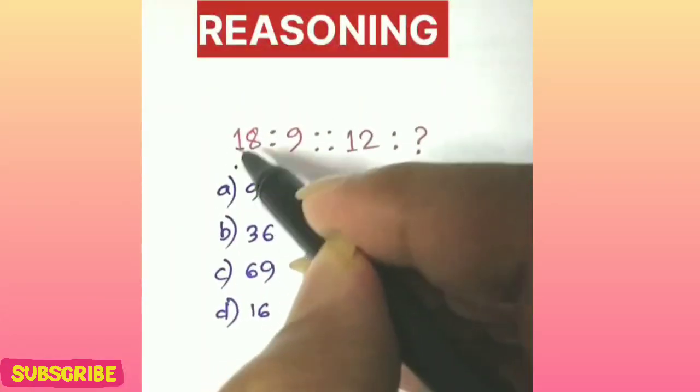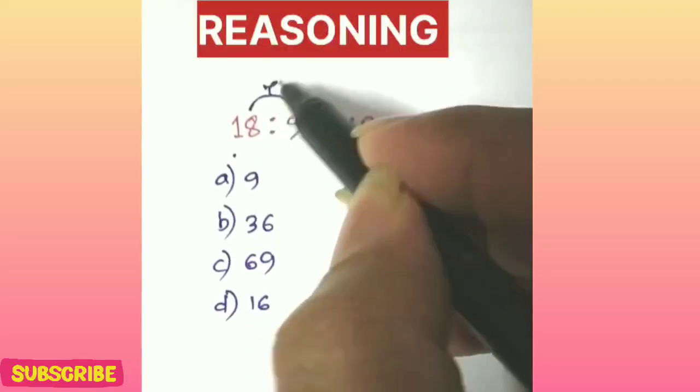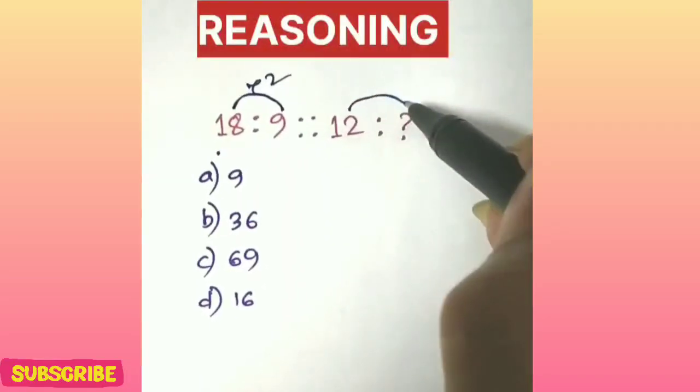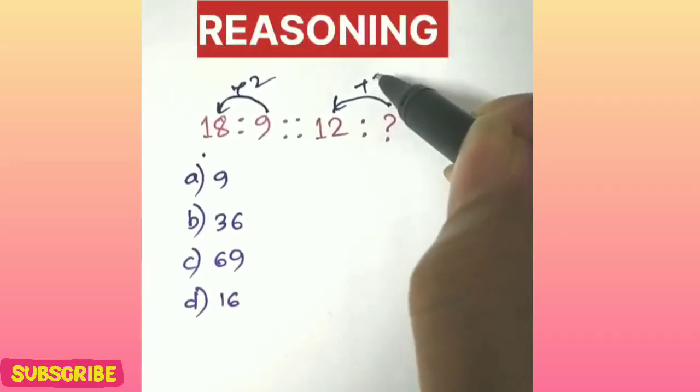Alright friends, let's try to solve a reasoning question, a complex type of question. If we take it double, so 18, 9, 9 to 18, 12 to 6.